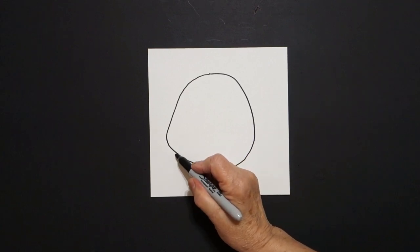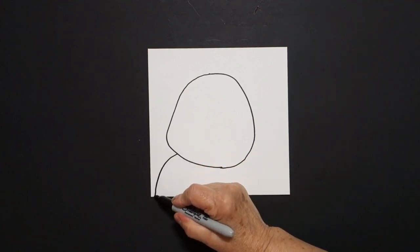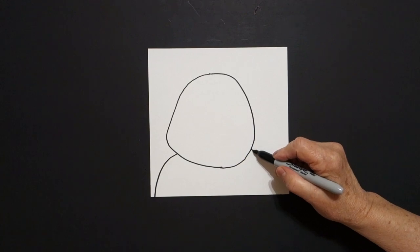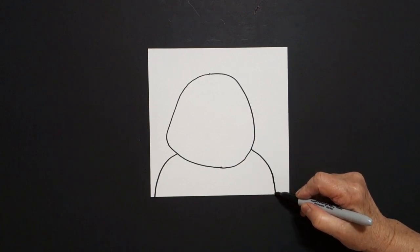Right here on the left I draw a curved line down off my paper. Come over on the right, curved line down, off my paper.